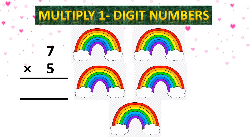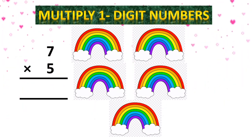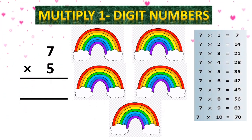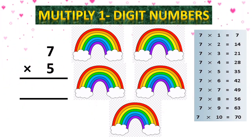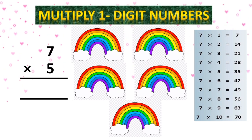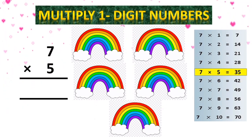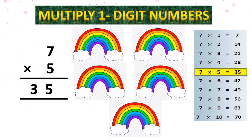Yes, bita — rainbow. Rainbow has 7 different colors, and now you have 5 rainbows. Very good. So 7 ones are 7, 7 twos are 14, 7 threes are 21, 7 fours are 28, 7 fives are 35.